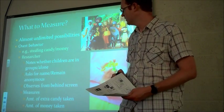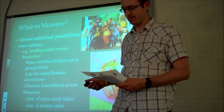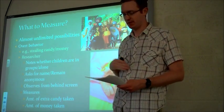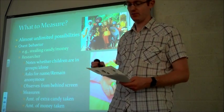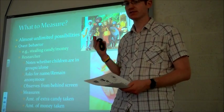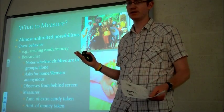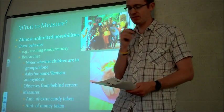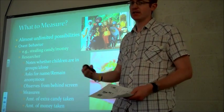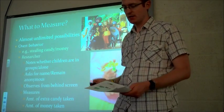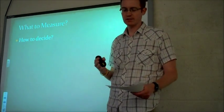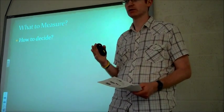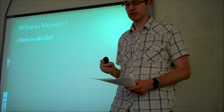Those are three big categories of potential measurement: overt behavior, physiological measurement, and self-report — all really widely used. At this point, you might be wondering, if I'm designing a study, how do I decide which one to use? How do I decide how to measure something specific that relates to my constructs of interest?